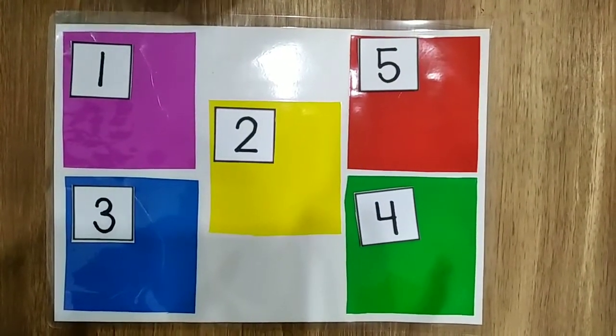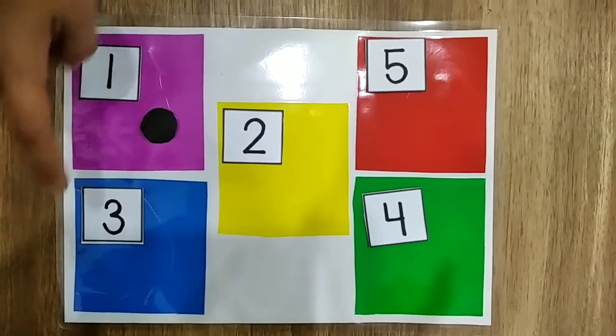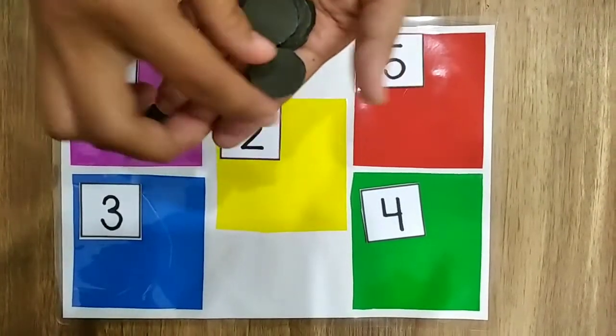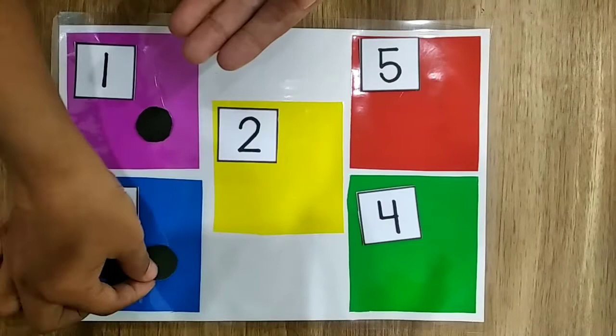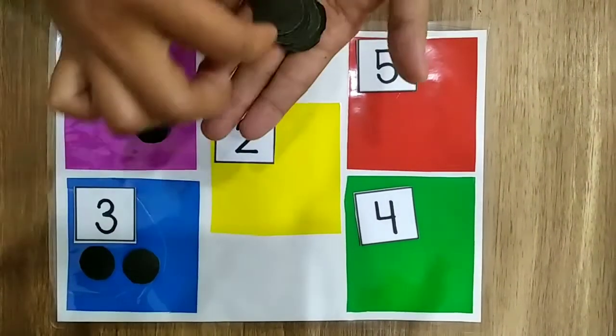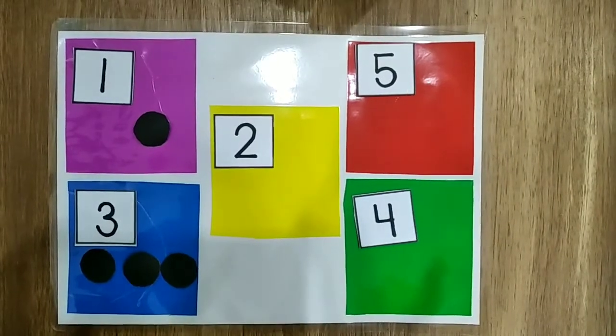One, put one circle. Three, put three circles. One, two, three. Can you do two?